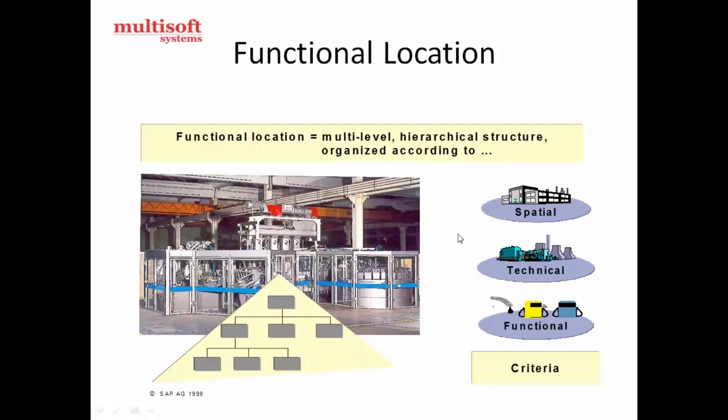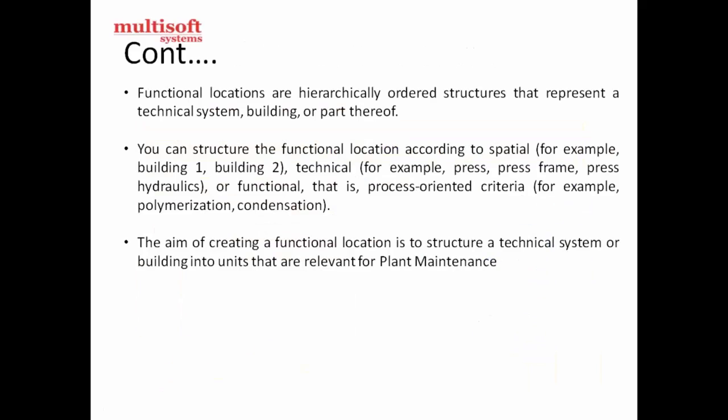Functional locations have a multi-level hierarchical structure, and organizations are organized according to that structure. So the three types are: spatial, technical, and functional.